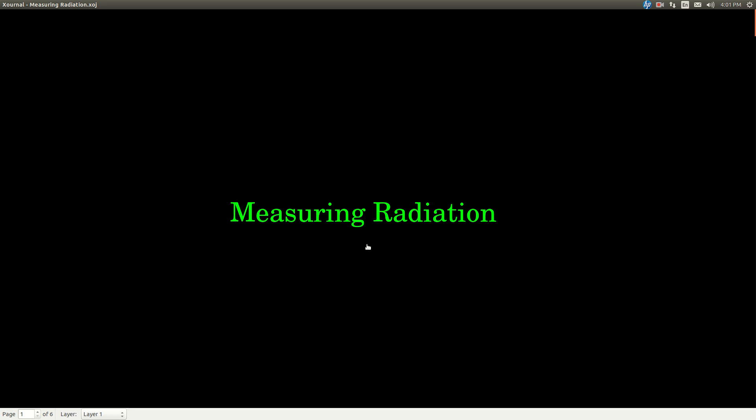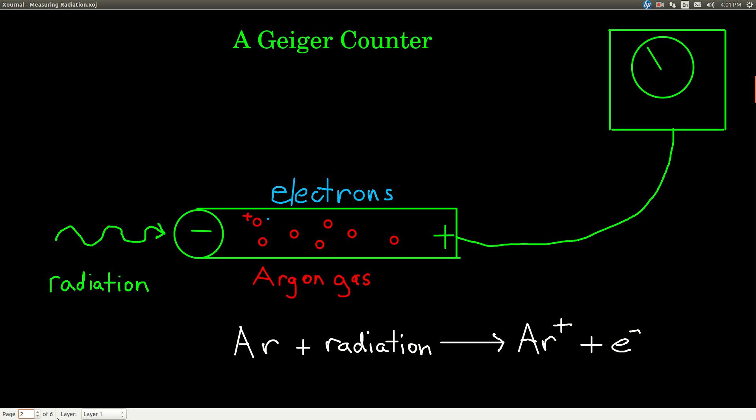In this video we're going to talk a little bit about measuring radiation, the units that we use to measure it, and a little bit about how we measure it. So the tool that we most commonly use to measure radiation is called a Geiger counter, and the basic Geiger counter works something like this.